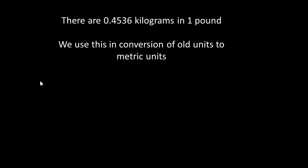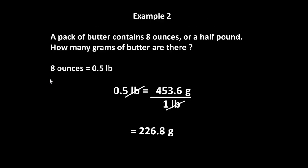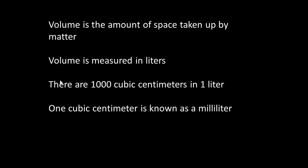If there are 0.4536 kilograms in a pound, I think we can use this to convert the old units into more recent metric units. So if you have a pack of butter, which is 8 ounces, or half a pound, you want to convert that to grams, it's 0.5 times 453.6, divided by 1, which is 226.8 grams.